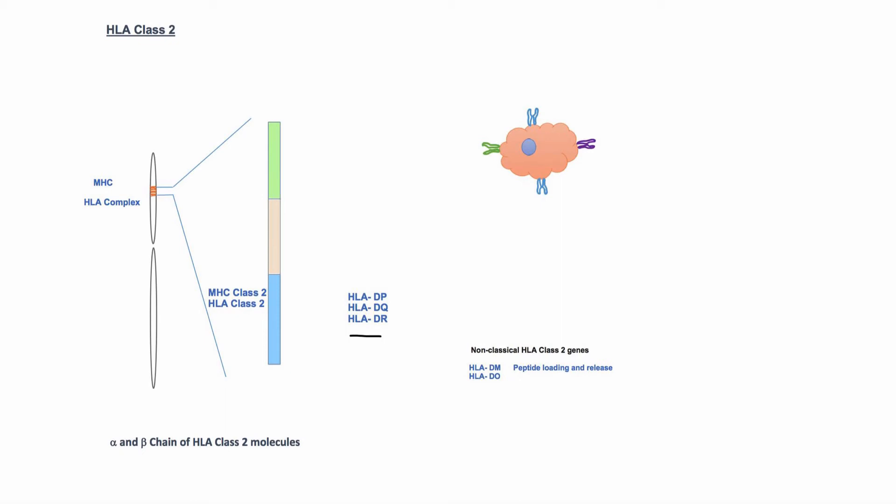These three genes will result in six different types of HLA class 2 molecules on surface of antigen presenting cells, with different peptide binding specificities.